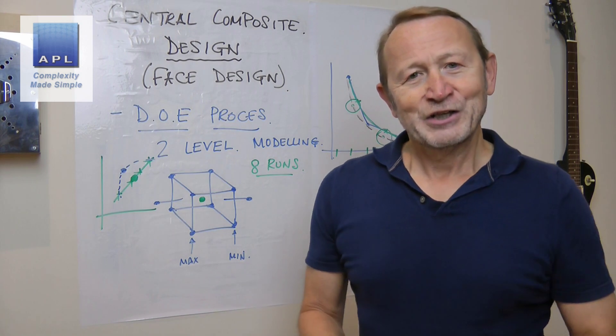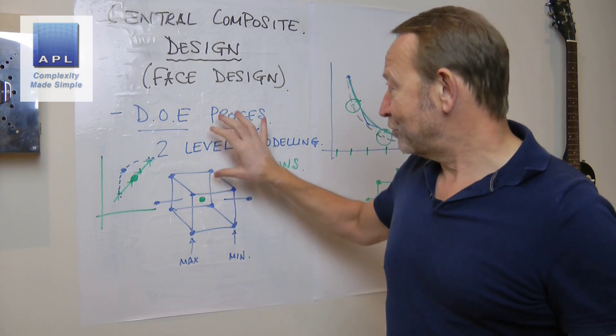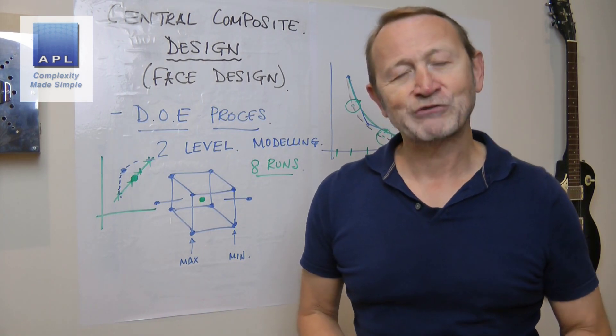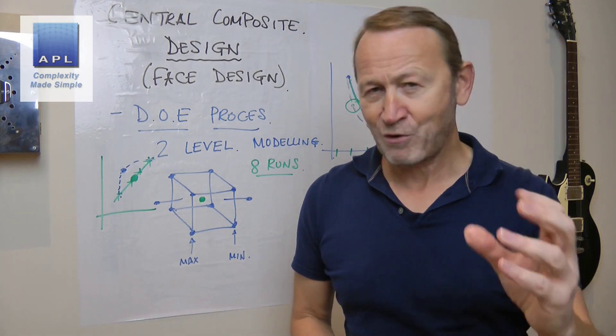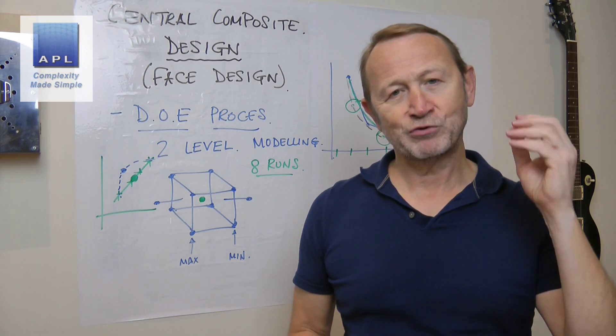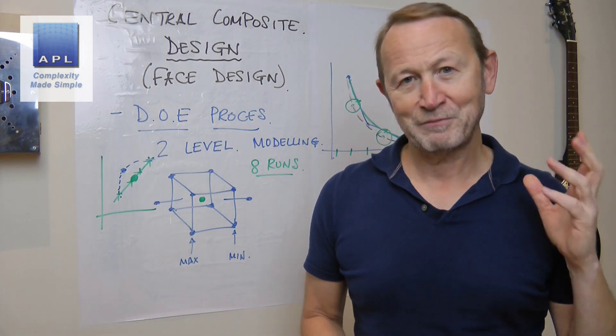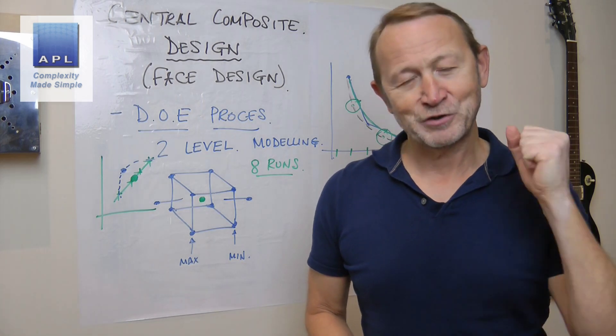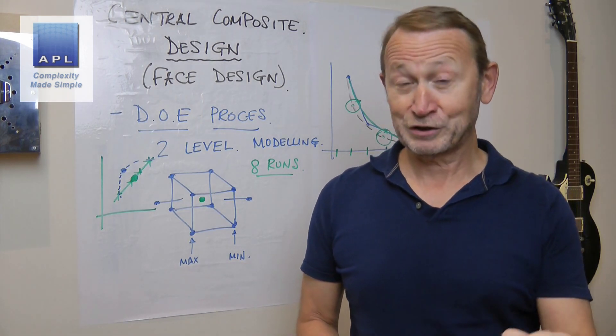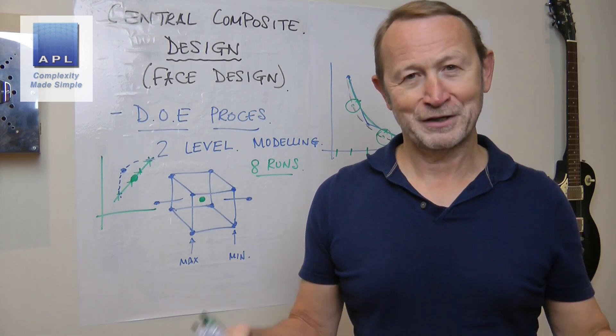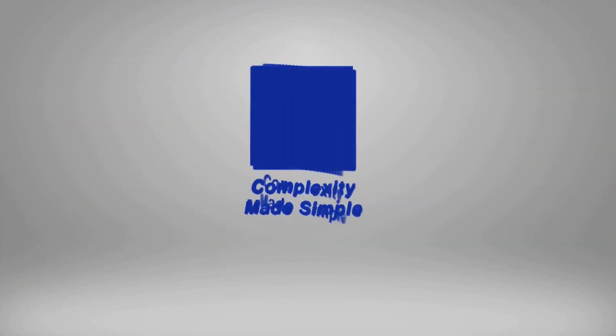Guys, go use these tools. Whatever you're doing. Two level, three level, face design. Full central composite design. The power of a designed experiment. You generate the maximum amount of information with the minimum amount of data. You can then learn how your process works. And then you can make more money.